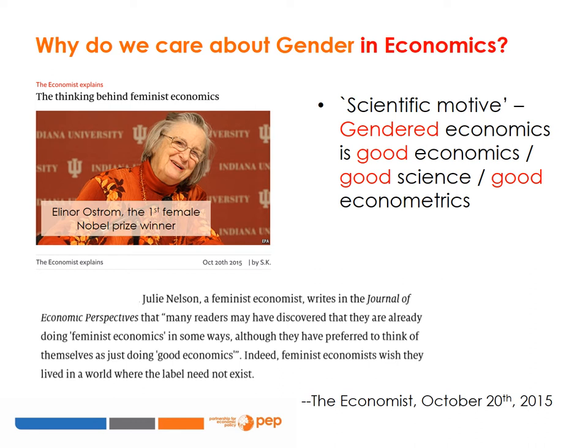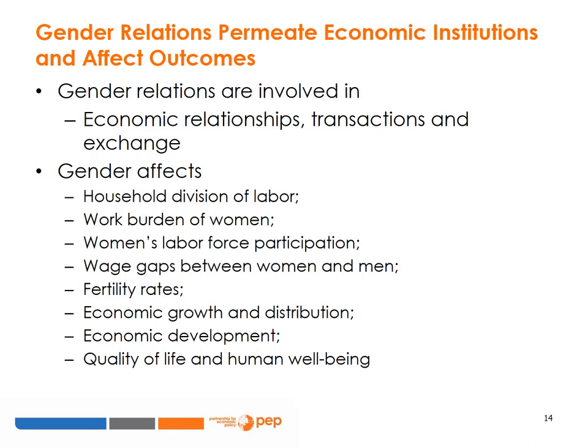Quoting from an October 2015 article from The Economist on the thinking behind feminist economics, Julie Nelson, a feminist economist, writes in the Journal of Economic Perspectives that many readers may have discovered that they are already doing feminist economics in some ways, although they have preferred to think of themselves as just doing good economics. Indeed, feminist economists wish they lived in a world where the label need not exist. Gender relations permeate economic institutions and affect outcomes; economic relationships, transactions, and exchange have gender relations inscribed within them.